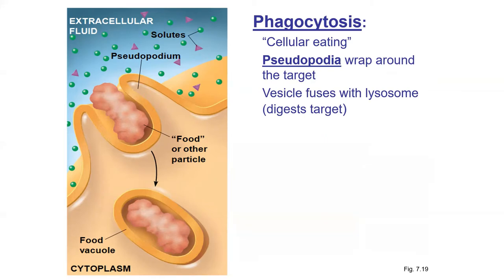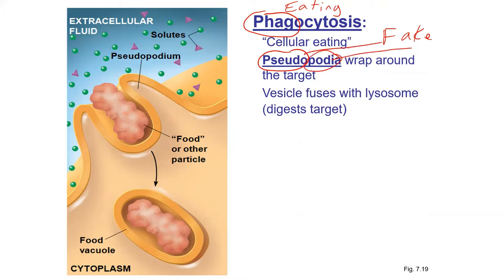There are different ways to do endocytosis. The first is called phagocytosis — 'phag' means eating, so we can call it cellular eating. The way this process works is that the cell forms things called pseudopods or pseudopodia. 'Pseudo' means fake and 'podia' means feet. The pseudopodia grab a food particle or an invading bacterium, and then they make a food vacuole.